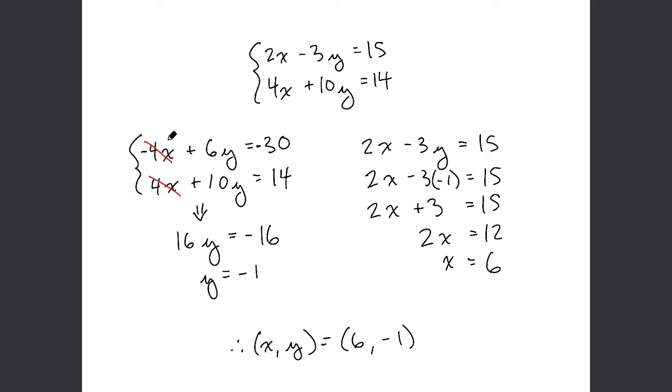Now, we can add the two equations together. In so doing, negative 4x plus 4x cancels out, so the x term is gone. 6y plus 10y comes out to 16y, and then on the right-hand side of the equation, we have negative 30 plus 14, which leaves us with negative 16.